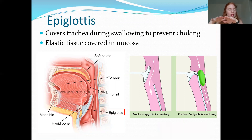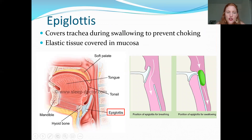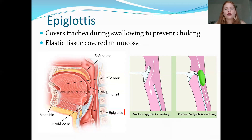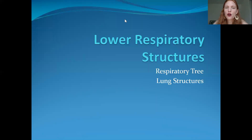To recap: the glottis is the rima glottidis plus the vocal folds together. The epiglottis, an elastic cartilage structure, sits above the glottis. When you swallow, the bolus — partially digested food — pushes against the epiglottis, closing it to prevent food from going down the trachea, which would cause choking. The food is directed down the esophagus, which is just posterior to the larynx. That covers all of the upper respiratory structures.